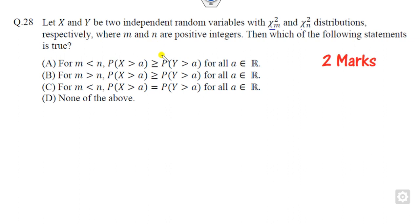Look at question number 28. What is given to you? X follows the chi-square distribution with m degrees of freedom, Y follows the chi-square with n degrees of freedom. What is the meaning? The mean of X is the degree of freedom, which is m, and variance is twice of m. Similarly, the mean of Y is n, and variance of Y is 2n. But if you look here, there is no need of finding the mean and variance.